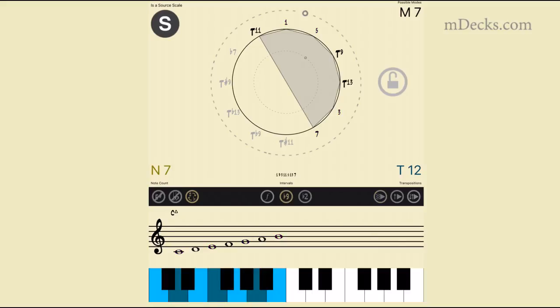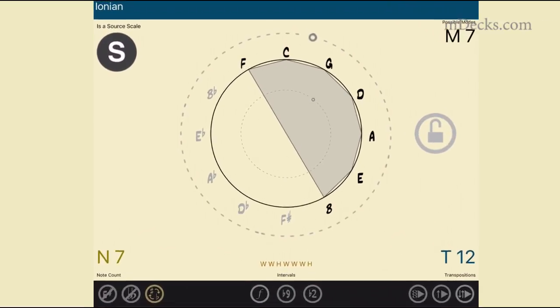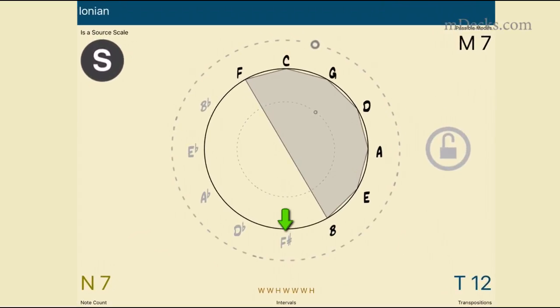Remember that only the notes in the graph belong to the major scale and the name or tonic of the scale is the top note in the circle which right now is C. The grayed out notes, F sharp, D flat, A flat, E flat, and B flat are not part of the C scale.